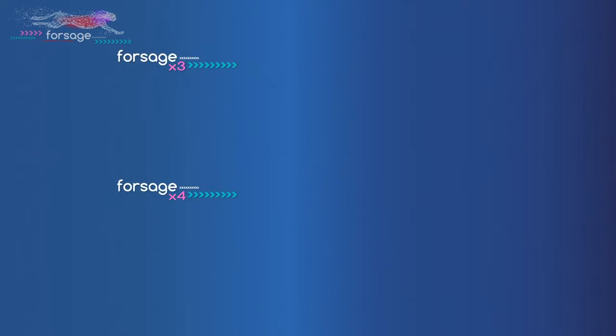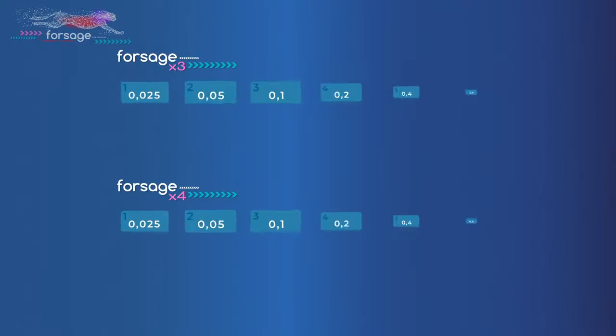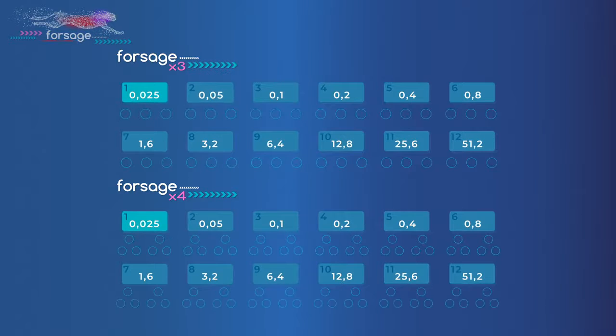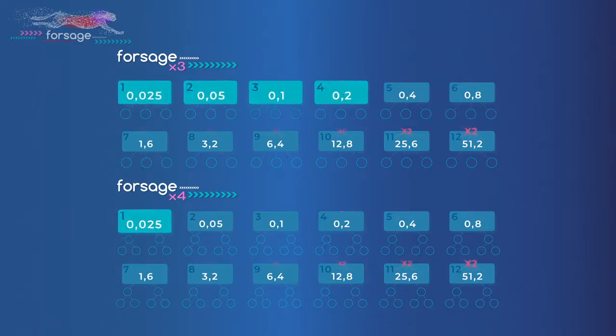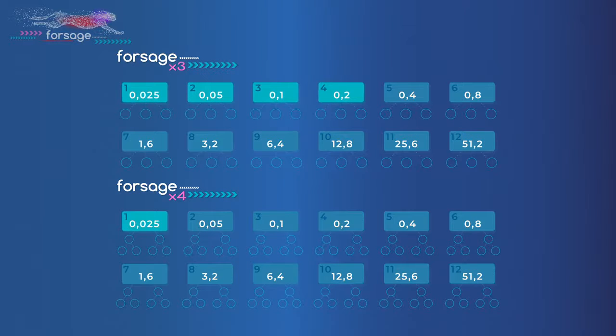Each of two programs, X3 and X4 has 12 slots. They all are identical and work in the same way. Each subsequent slot is exactly two times more expensive than the previous one. Accordingly, income from them are also twice as high. All active slots move and bring your revenue in parallel.